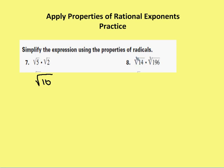Same index, same power — I just multiply these two values together. So 14 times 196. Let me check the calculator: 14 times 196 gives me 2744.